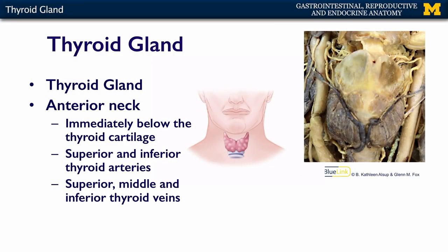The thyroid gland is supplied by the superior and inferior thyroid arteries, and it is drained by the middle, inferior, and superior thyroid veins.